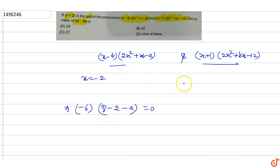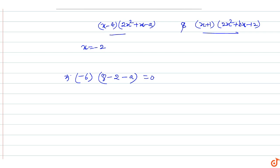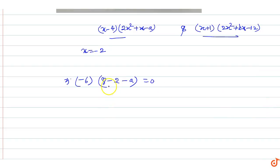Since x+2 is a factor of this equation, the value of a equals 6. Now we know that x=-2 is also the root of the second equation.